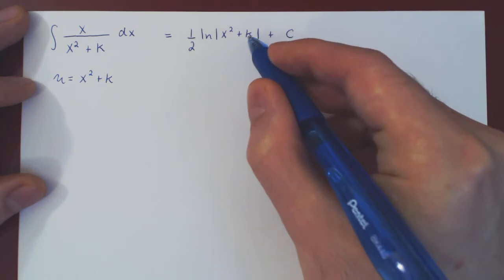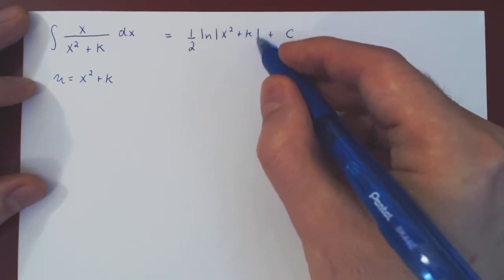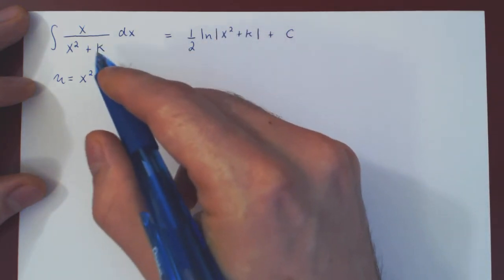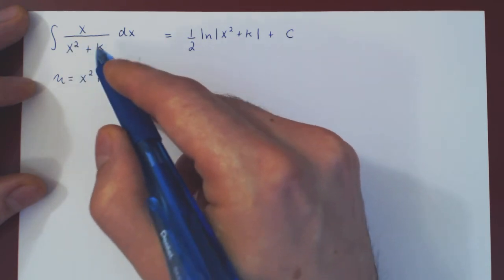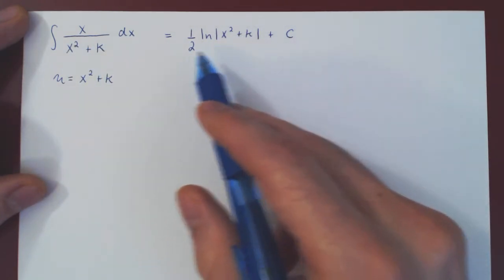Keeping in mind that we do need to keep the absolute value as k could be negative. So this could be for example x squared minus 10. And that's it.